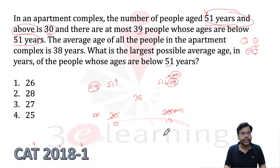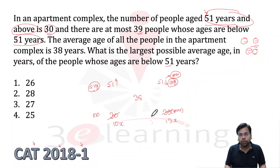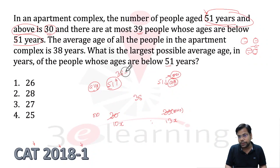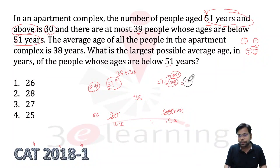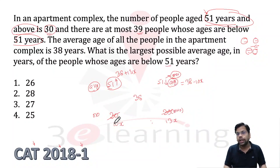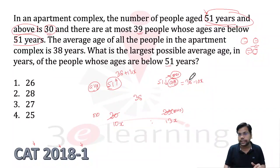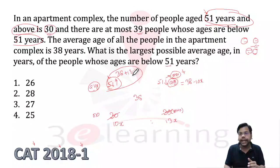The ratio is 10 to 13. Let this be x. In the star method, one value is more than the middle value, one is less. Since 51 and above is greater, that side will be more. The difference on one side gives 38 + 13x, and on the other side 38 − 10x.